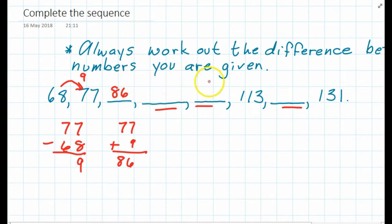One way to check your work is when you get the answer for this missing number here, make sure that it is 9. In order to get that, you had to add 9 from this number to get 113. So there are lots of different ways that you can check your work.